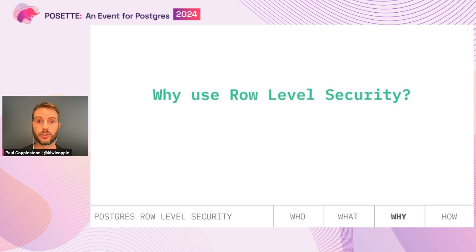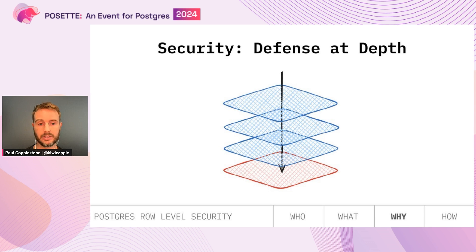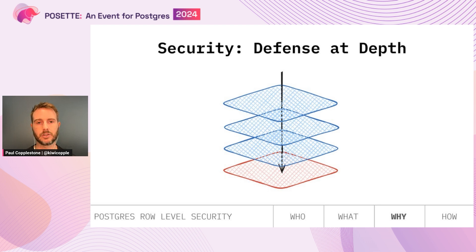So why would you use Row Level Security? The most obvious reason is security. There's a concept called defense in depth — adding multiple layers to your security: front end, application, API, middleware, all the way down to your database. I really like it at the database level because it increases your default security posture. Everything built on top of a Postgres database will at least inherit the database's default security model.